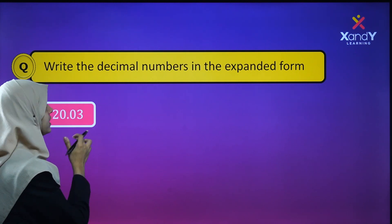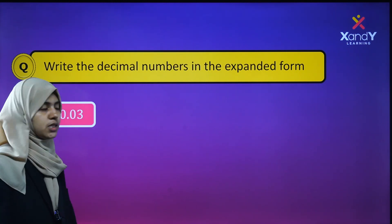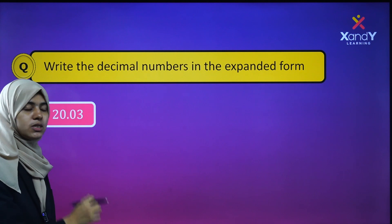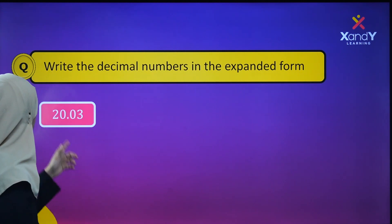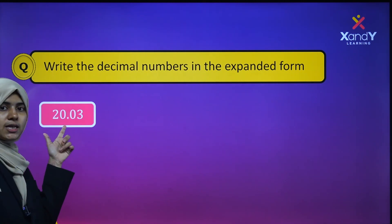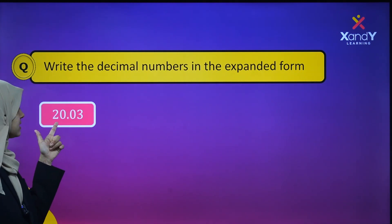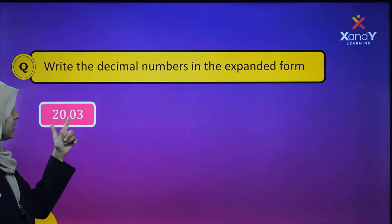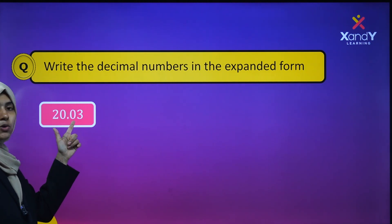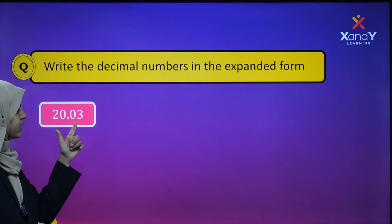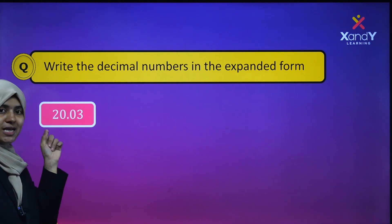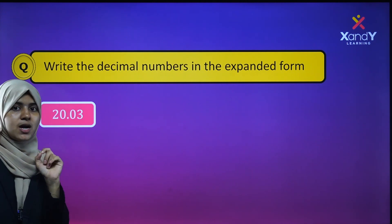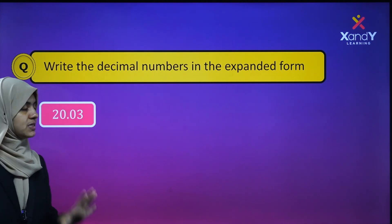What is 20.03? Let's look at the place values. 2 is in the tens place, 0 is in the ones place, 0 is in the tenths place, and 3 is in the hundredths place.